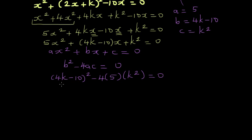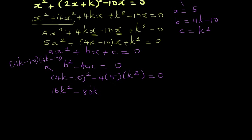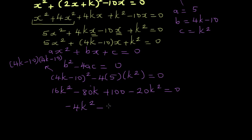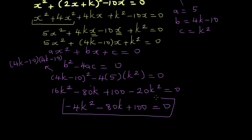Expanding: 4k minus 10 times 4k minus 10 gives 16k squared minus 80k plus 100, minus 20k squared equals 0. Writing in standard quadratic form: minus 4k squared minus 80k plus 100 equals 0. Now enter this as a quadratic equation where a is negative 4, b is negative 80, and c is 100, and solve for k.